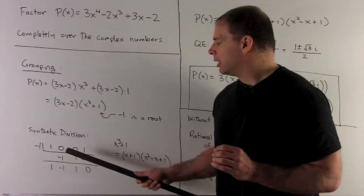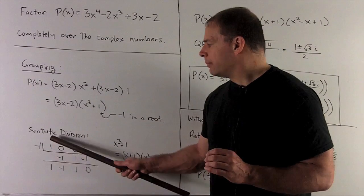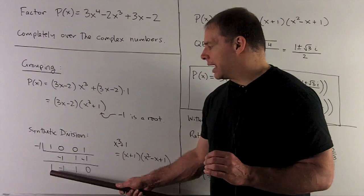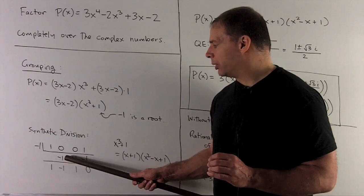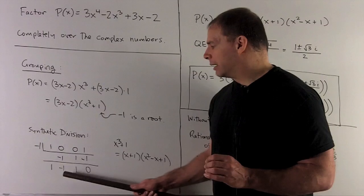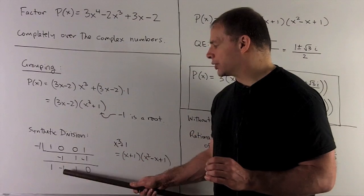So what happens is we go down this column, I get a 1. Multiply by minus 1, I get minus 1, I put it there. Add down this column, I get minus 1. Multiply by minus 1, I get a 1, I put it there.